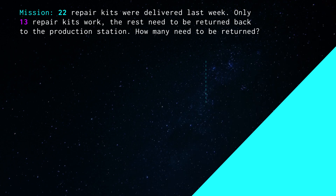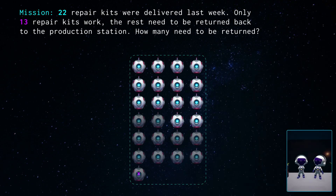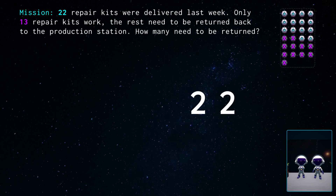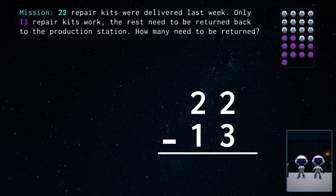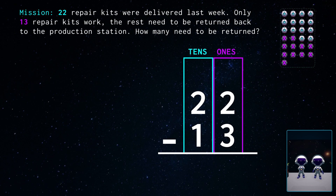Let's do it! Okay! Let's bring up the repair kit shipment manifest mission control sent over. We're gonna need to use subtraction to figure this out, and it looks like we'll need to regroup to find our answer. So we received a total of 22 repair kits, and only 13 of them work correctly. Let's add a tens and ones column to help us visually approach the problem. Maybe we should bring up our place value blocks as well to represent the total number of repair kits.